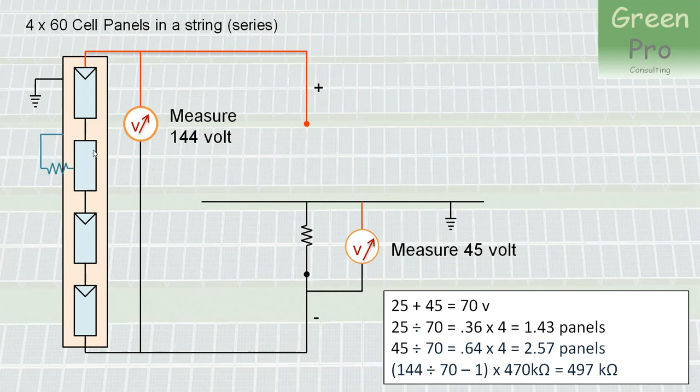So you now know that this is the faulty panel. So you send somebody to go and look at that panel. And if you test the impedance between the leads of that panel and the frame, you should measure a resistance. And what are we talking about? What is the resistance? What you can tell him is that 144, being that voltage, divided by 70, which is the sum of the two voltages that you measured, minus 1 times 470, which is your test resistor, gives you 497. So you know that the problem that you have there is a resistance of 497 kilohms.